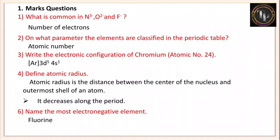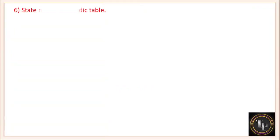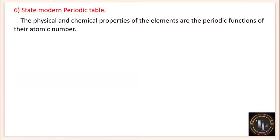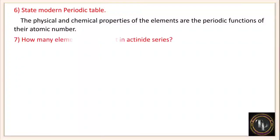Name the most electronegative element. The most electronegative element in the periodic table is fluorine. State the modern periodic law: the physical and chemical properties of elements are periodic functions of their atomic number. Based on atomic number, elements are arranged in the periodic table — that is the modern periodic law.